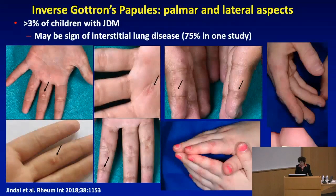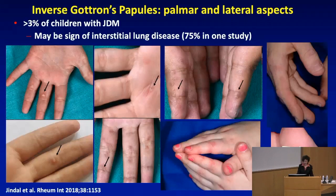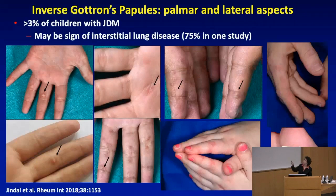Something that we often don't recognize is the concept of inverse Gottron's papules. These are on the palmar and lateral aspects, and they've been described in a minority of children. But in one study, 75% of those who had these had associated interstitial lung disease — so it may be a sign of that. These can also occur on the toes.